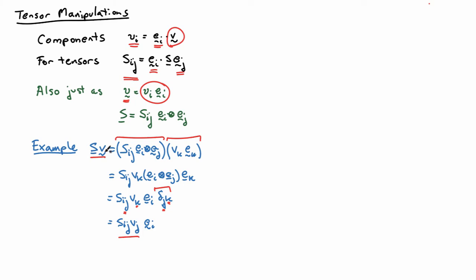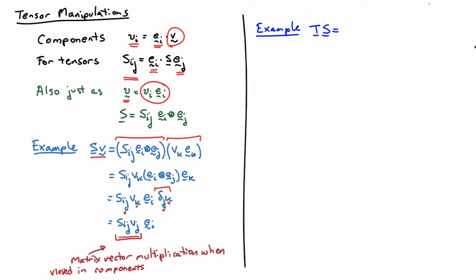If you look at that result, you'll see that it's basically matrix-vector multiplication. Put the components of the tensor in a matrix and put the components of V into a column vector — that's the matrix multiplying onto that column. So just view it as component matrix-vector multiplication.